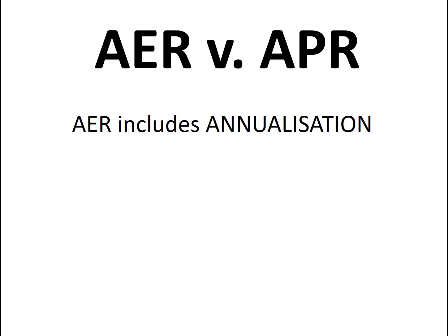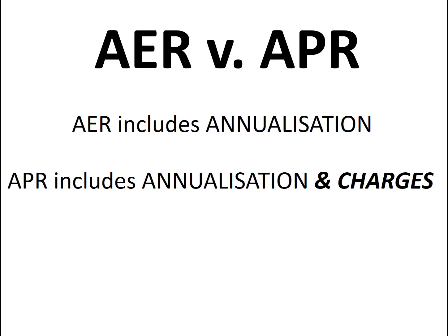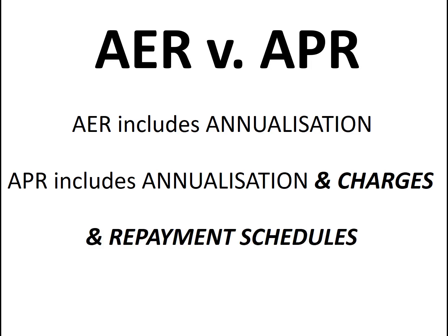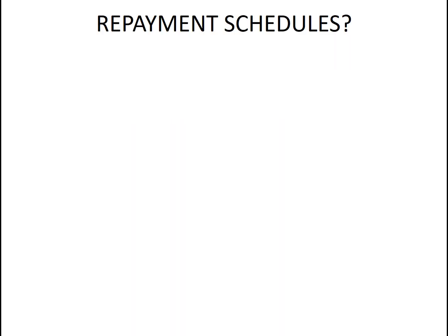When we compare AER — annual equivalent rate — with APR — annual percentage rate — we find that AER simply includes annualization, whereas APR includes annualization and charges. And it also includes repayment schedules. So, what on earth are repayment schedules?